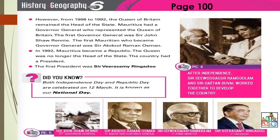We talked about how Mauritius obtained its independence on the 12th of March 1968. The ceremony was held at the Champs-de-Mars in Port Louis. The Union Jack was replaced by the Mauritian flag in the presence of the British governor, Sir John Shaw Rainey, and Sir Seewoosagur Ramgoolam.